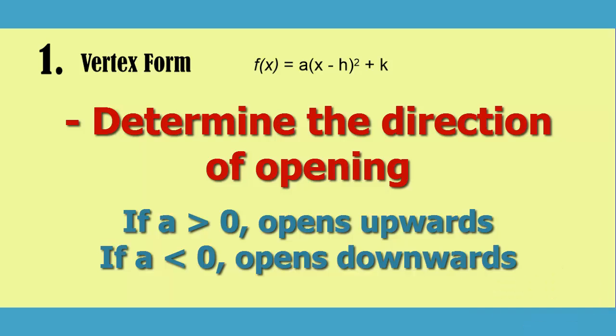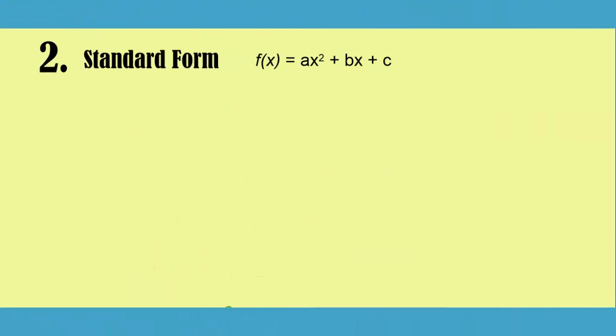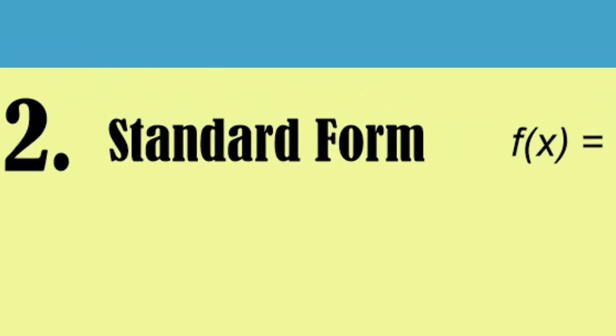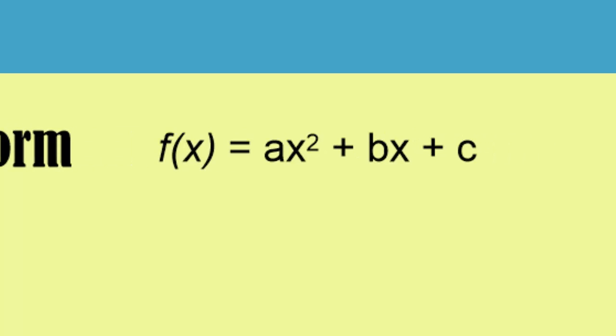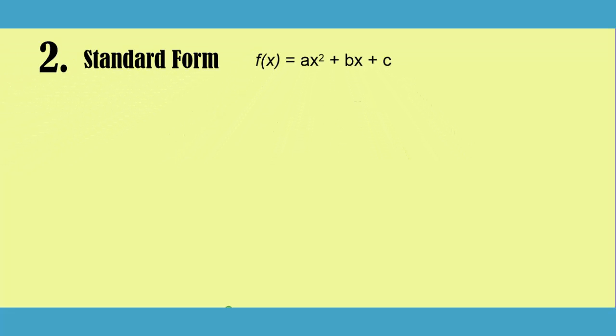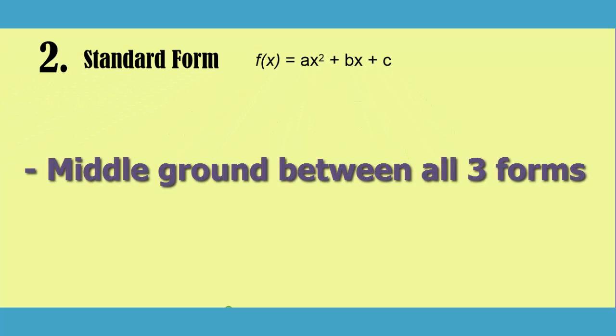Let's now look at our second form. Like the linear function before it, a quadratic function has a standard form: f(x) equals ax² + bx + c. Standard form has a ton of uses, but mainly it's a middle ground between all three of the different forms. We're going to discuss a little bit later how we can get from one form to the other, but all of them normally start from standard form.